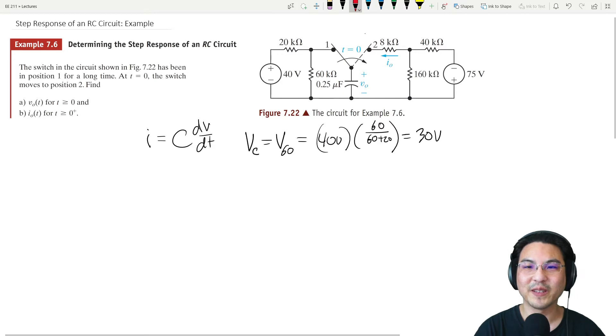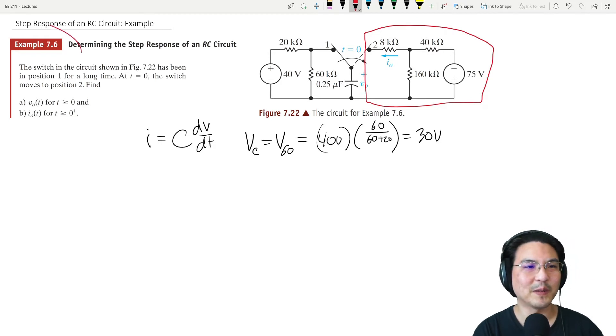It's convenient if we can express this as a Norton equivalent circuit. You can follow along the example in the book - it solves for the open circuit voltage, deactivates the source, and solves for the equivalent resistance to get the Thevenin equivalent, and then you do one source transformation.